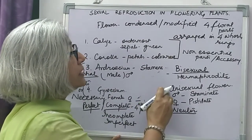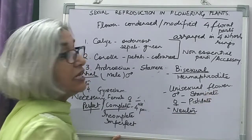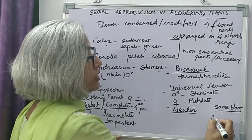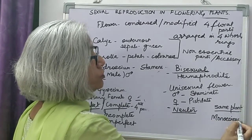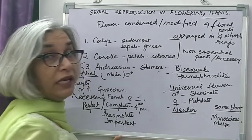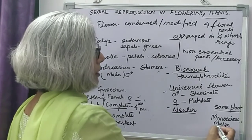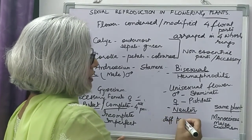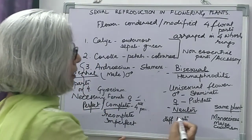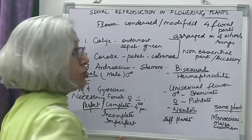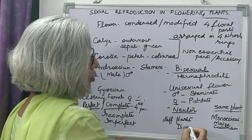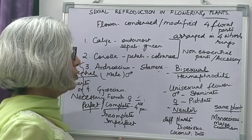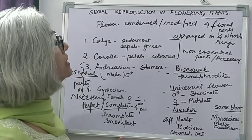If unisexual flowers — that is staminate and pistillate flowers — are present on the same plant, we use the term monoecious to describe it, like in the case of maize and cucumber. When they are present on different plants — that is male flowers on one plant and female flowers on a different plant — we use the term dioecious for it, like in coconut and date.